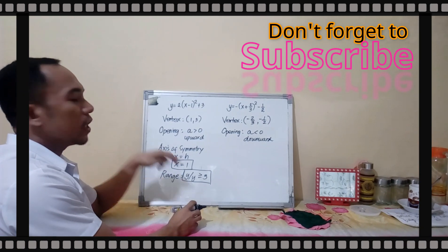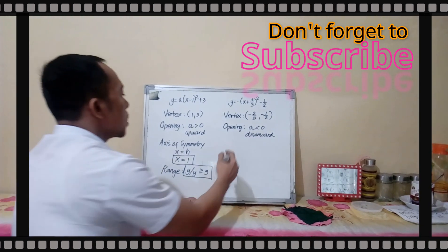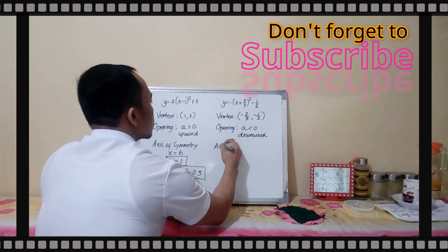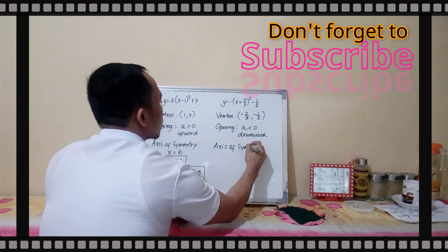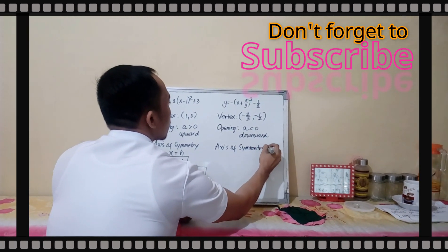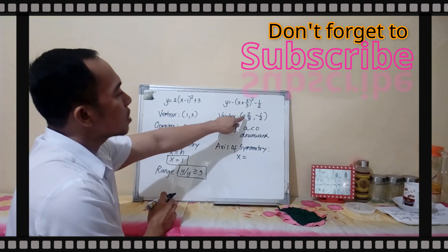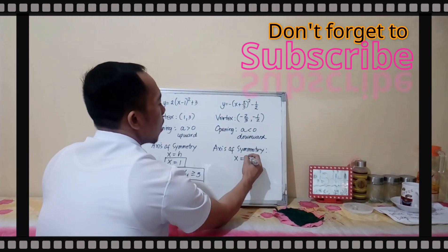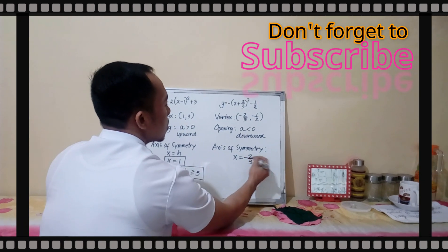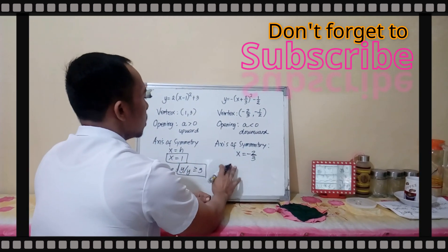Aside from the opening, we can also get the axis of symmetry. The axis of symmetry is x equals h. But our h is negative 2 over 3. Our axis of symmetry is x equals negative 2 over 3.